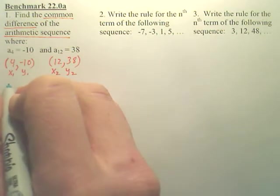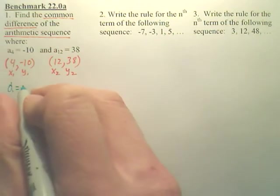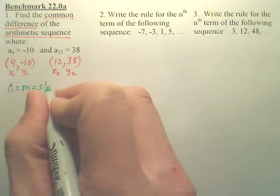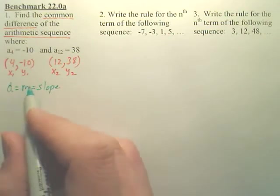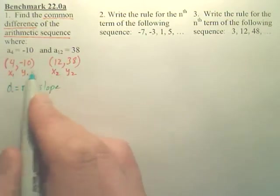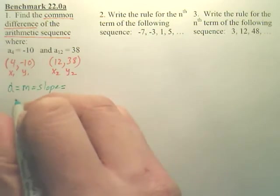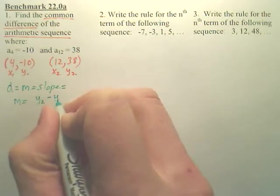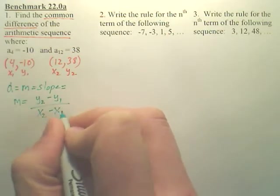What we realize is your common difference is the same thing as M, which is your slope. So you have to realize common difference and slope are the same thing. So when I change these into coordinates, I could actually find the slope between these two points.